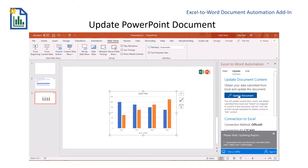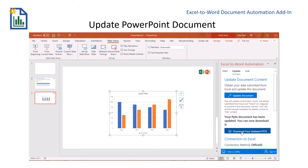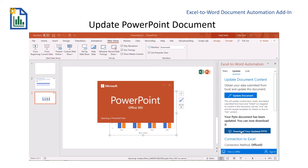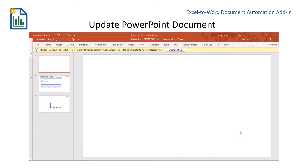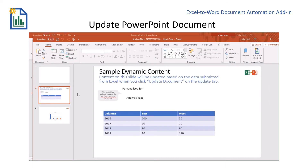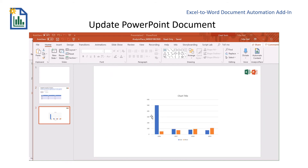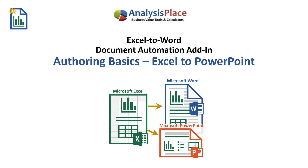When you update PowerPoint, you'll need to download the updated document. It says three items have been updated. Let's close that and download my updated PowerPoint. We should be able to see the changes. I can see that the name was changed to Analysis Place, my numbers were changed, and my chart was changed. We hope this video has made it easier for you to link Excel with PowerPoint using the Excel to Word Document Automation add-in. Thank you and have a great day.